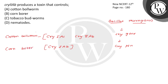Cry2AB — who is controlling it? The cotton ball worm. Option A is correct. The other options — corn borer, tobacco budworm, and nematodes — are incorrect. For nematodes we use the RNAi technique, that is RNA interference. So three options are incorrect and one is correct. This information is from page number 180.